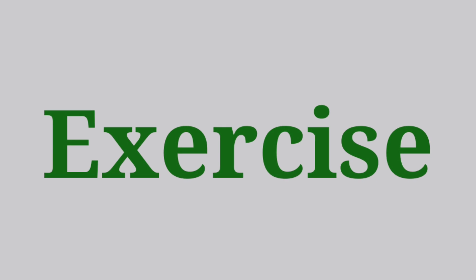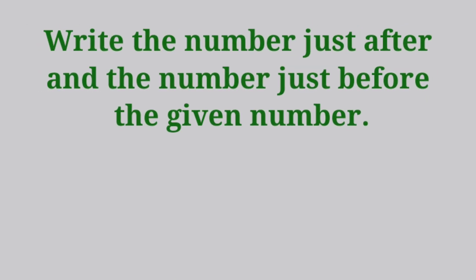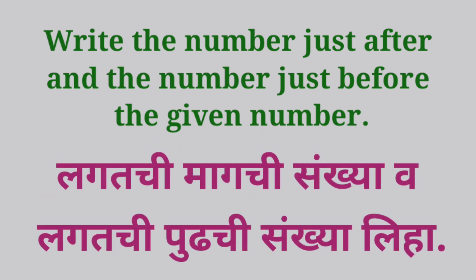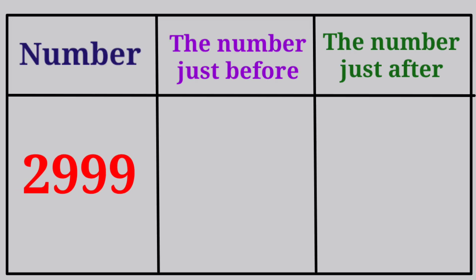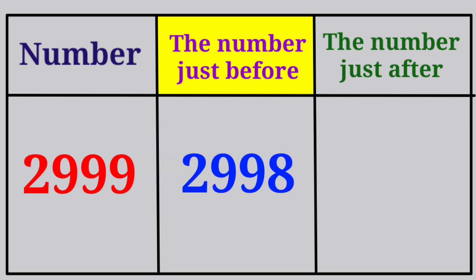Let's do the exercise. Write the number just before and the number just after. The given number is 2999. The number just before 2999 is 2998, and the number just after 2999 is 3000.